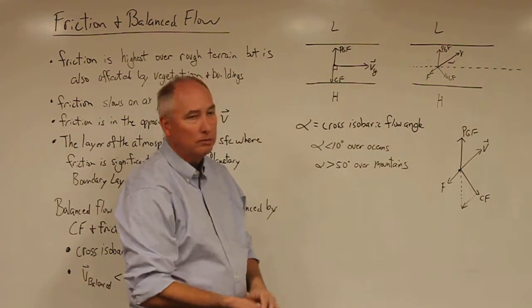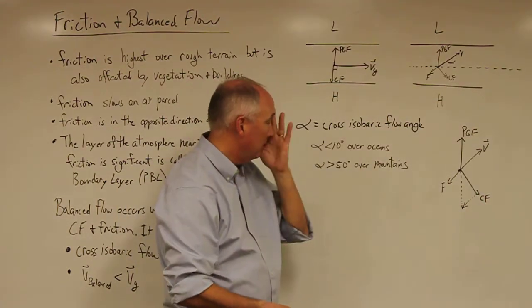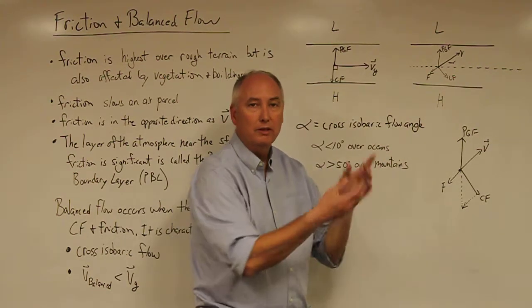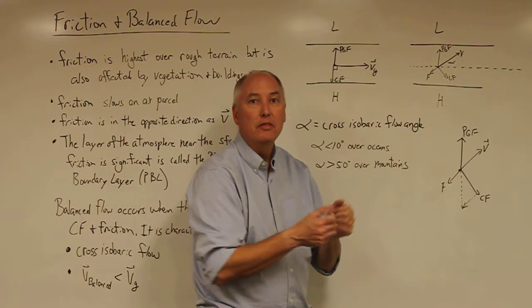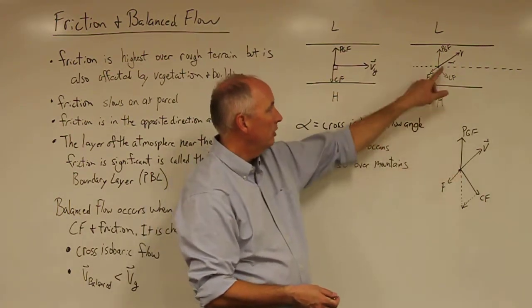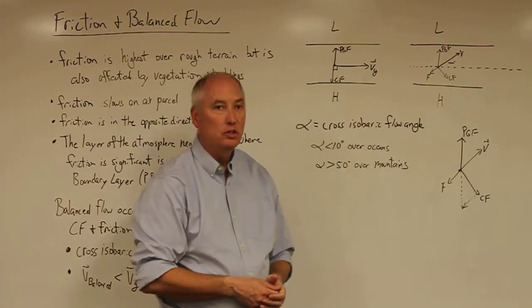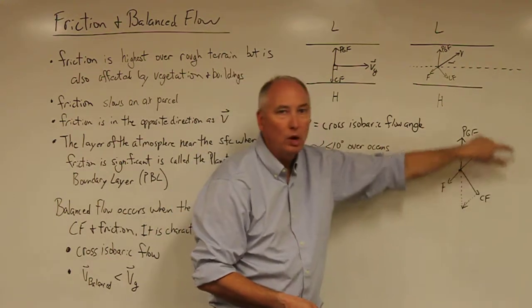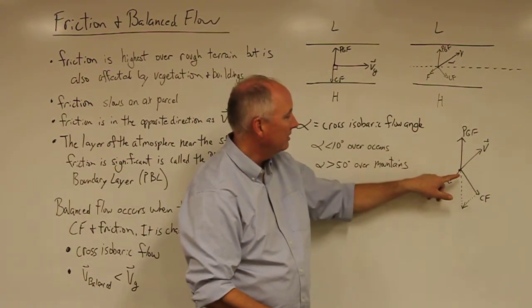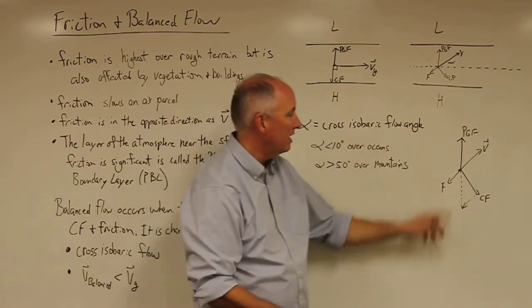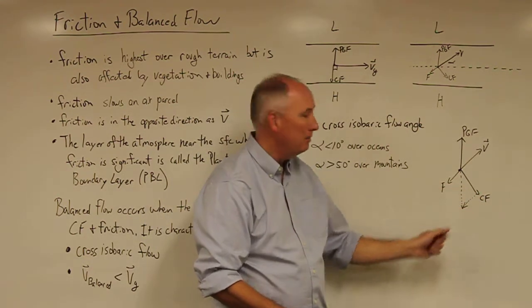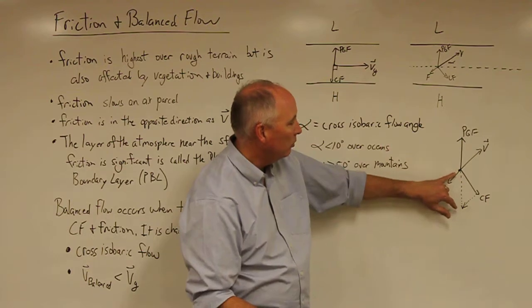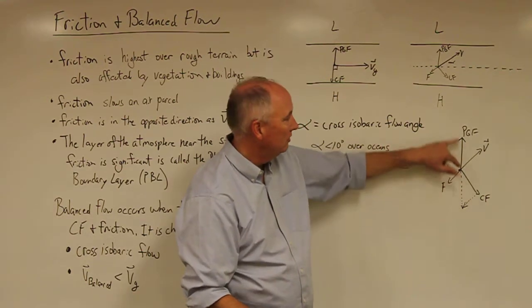I want to contrast that with balanced flow, which is shown over here in this diagram. Friction is acting to slow down the velocity vector. When the velocity vector is slowed down, then the Coriolis force is weaker. The Coriolis force still acts at a right angle to the velocity vector and pressure gradient remains unchanged. If you blow up that force diagram, you can see that the pressure gradient force is balanced not by the Coriolis force, but by a combination of the Coriolis force and the frictional force. When you add those two vectors together, you will equal an opposite force to the pressure gradient force.